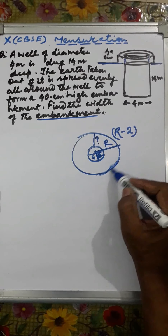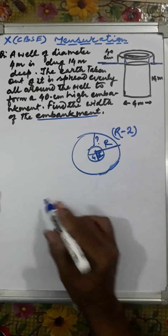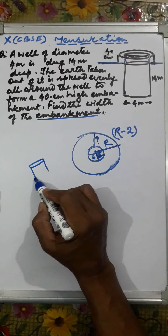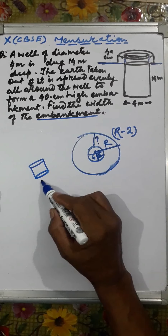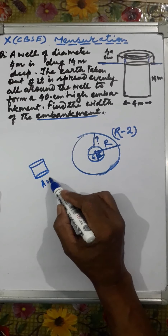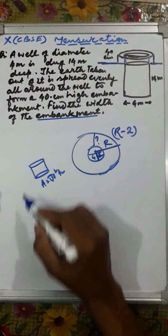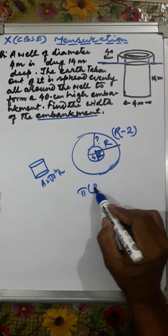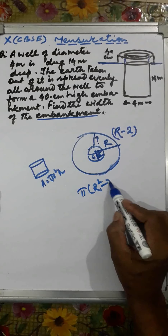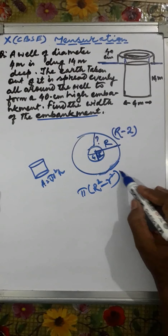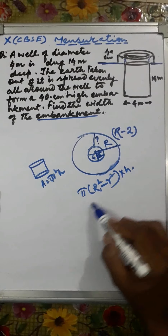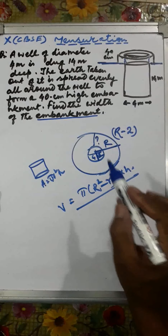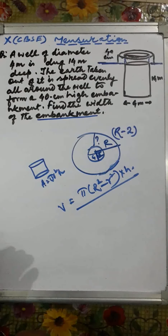To find the volume of the embankment, we know that the volume of any cylinder is given by base area (π r²) into height. For the embankment, the base area looks like a ring, so it is π(R² − r²) into height. This is the volume formula for the embankment that we shall use.